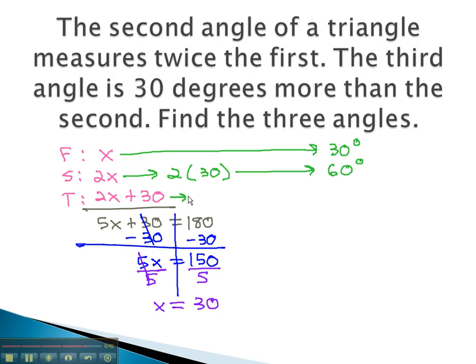Finally, to find the third, we plug it in to our expression 2x, or 2 times 30, plus 30. 2 times 30, we know is 60. Adding 30 more, we end up with 90.